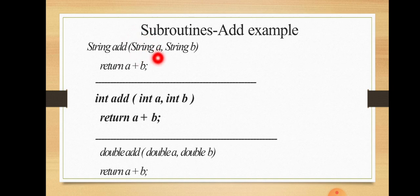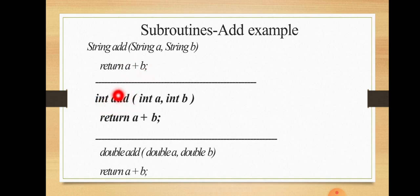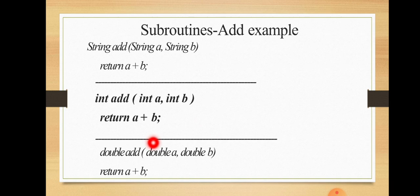The actual parameters A and B are both of string type. The body of the subroutine adds both A and B. Similarly, the first subroutine named 'add' adds two integer numbers A and B, and the return type is integer. Another example: we are adding two double numbers A and B, and the result will also be a double, so the return type is double.